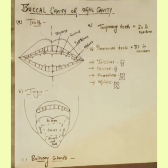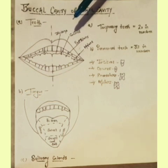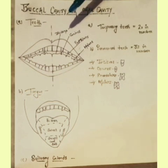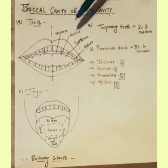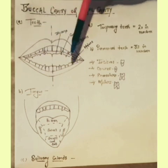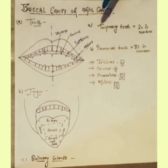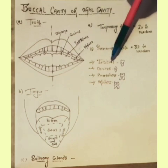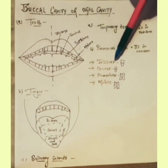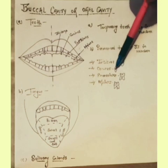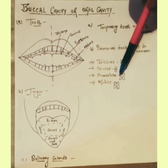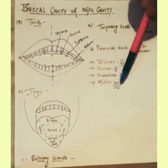Teeth: The food taken into the mouth is broken down into smaller pieces with the help of teeth. The process of breaking down food into smaller pieces by the teeth is called mastication. There are four different types of teeth in the mouth: incisors, canines, premolars, and molars.